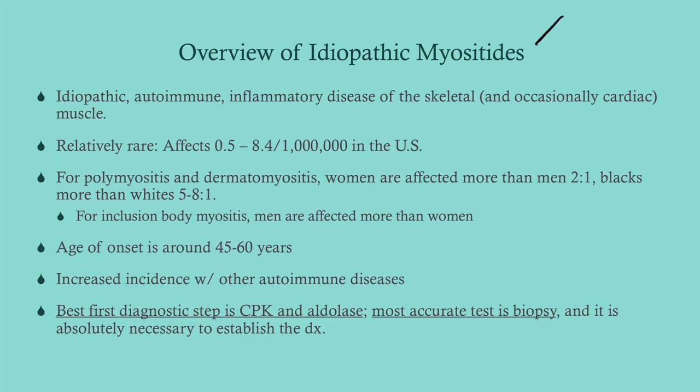The idiopathic myositides include polymyositis, dermatomyositis, and inclusion body myositis — these are the three that get tested. These are autoimmune inflammatory diseases affecting skeletal muscle only; there are no cardiac issues. It is relatively rare but commonly tested. There is a racial predilection towards Blacks and a gender predilection towards women, with age of onset around 45 to 60 years. There is also an increased incidence with other autoimmune diseases like lupus and RA.